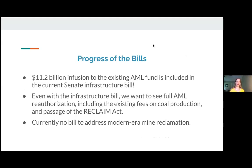Some of you may know we do have some bills in the works. The specific bill I want to talk about today is AML reauthorization. That bill would reauthorize the AML program for an additional 15 years and reauthorize collection of the fee on coal mining that currently provides money for the fund. The version in the Senate infrastructure bill includes an influx of over 11 billion dollars into the AML fund. While that's still not quite enough if the actual outstanding cost is closer to 20 billion, 11 billion dollars is a huge influx — roughly the same amount the fund has collected over the last 40 to 50 years — and it's a huge win.